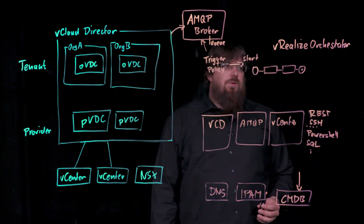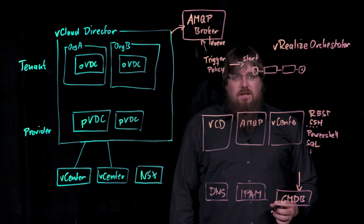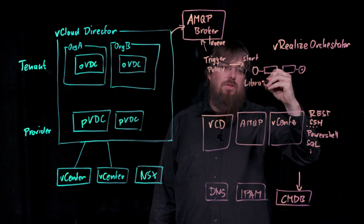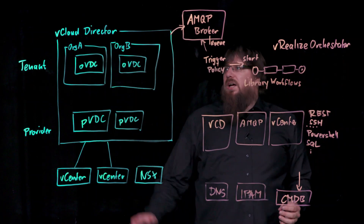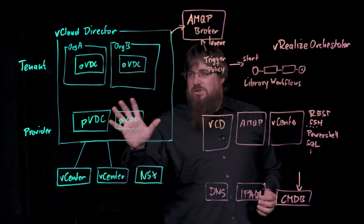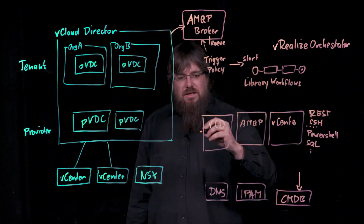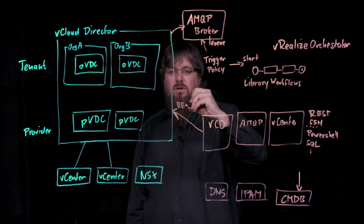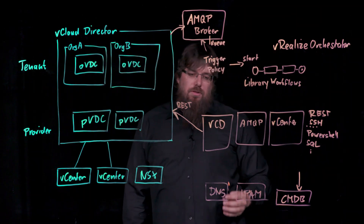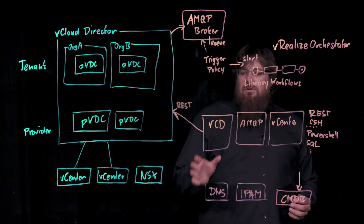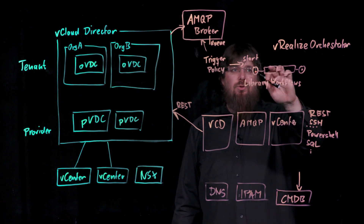Another scenario is to use the vCloud Director plugin to directly automate tasks in vCloud Director. You can build workflows or use the library workflows that come with the different plugins to automate all sorts of tasks. The vCloud Director plugin covers the complete API of vCloud Director, allowing you to create workflows to automate anything you can do in vCloud Director. Technically, vRealize Orchestrator makes REST calls to the vCloud Director API, either at a provider level or tenant level depending on your plugin configuration. The plugin wraps and bundles all the REST calls into objects that can be used within workflows.